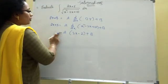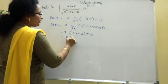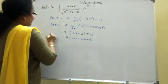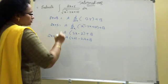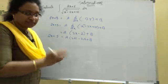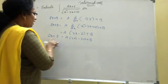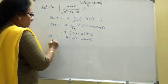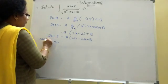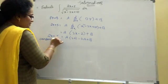Here we will get A multiplication. We will get A into 2x minus 2A plus B. We will get 2x plus 5, right? Now here we will get x coefficients compare and also constants compare. What are the x coefficients here? 2 equal to 2A. Comparing on both sides. Comparing on both sides. Then coefficient of x.